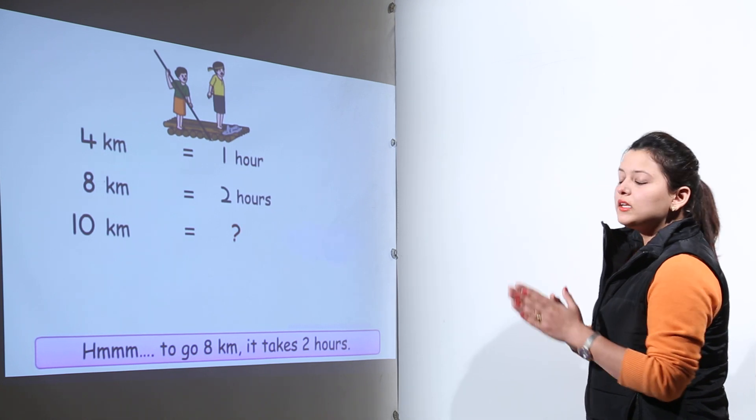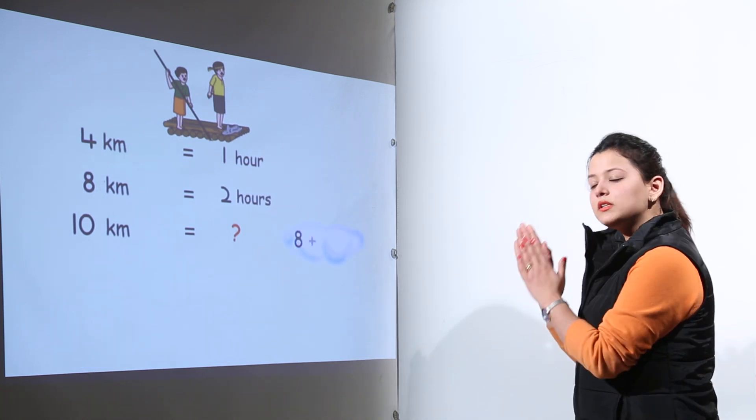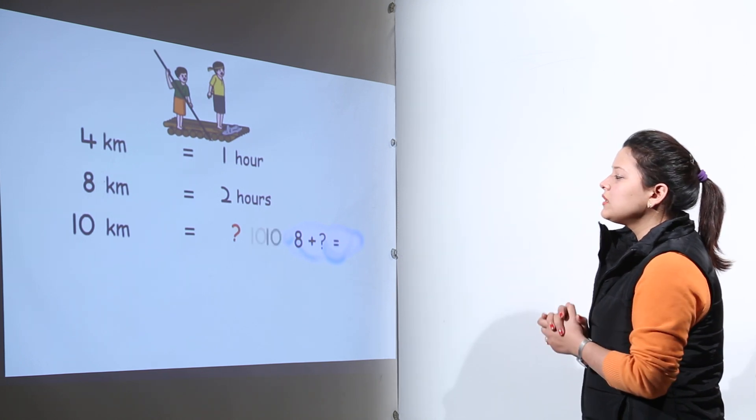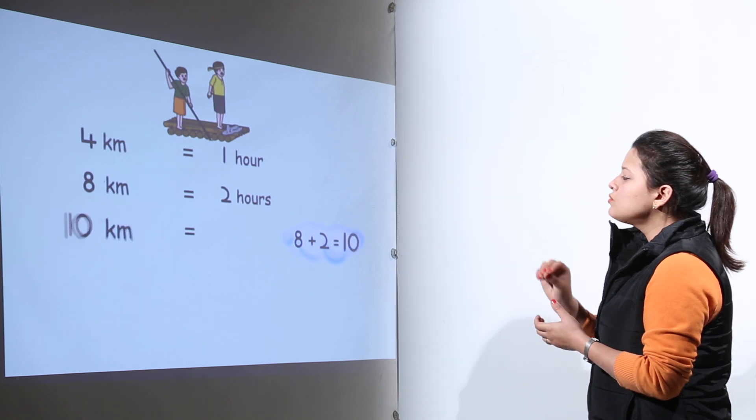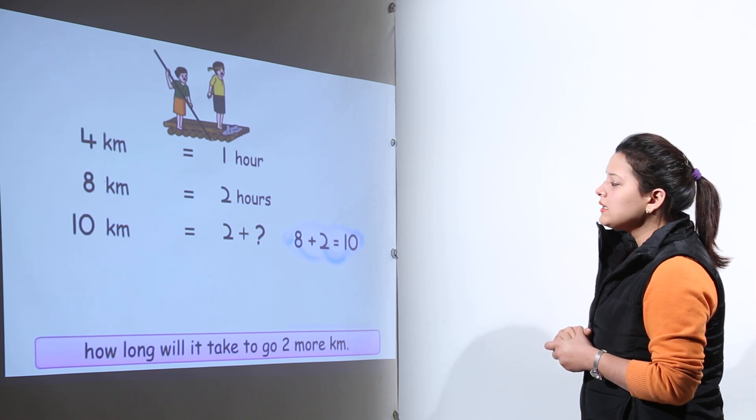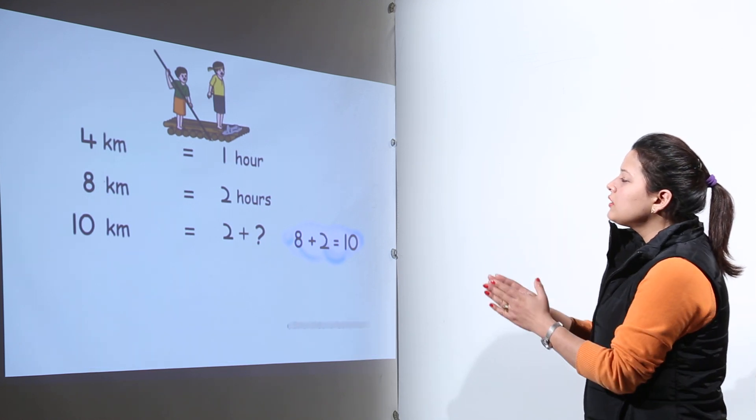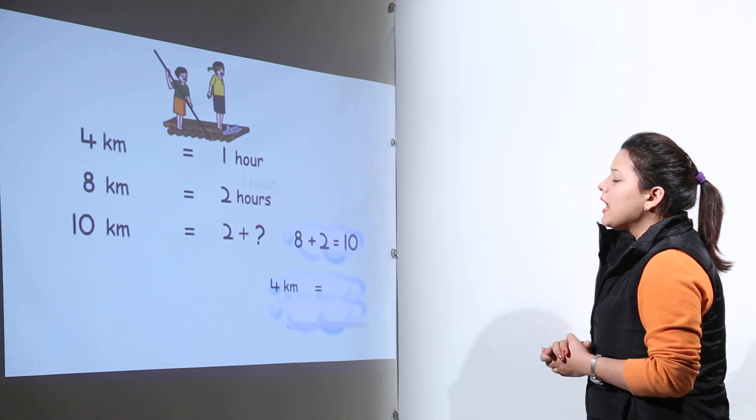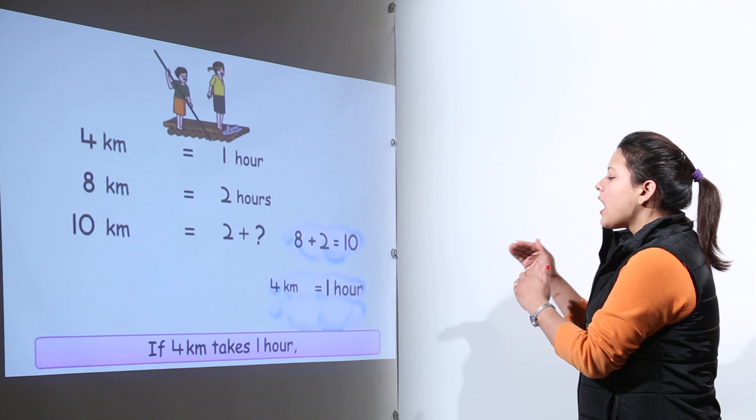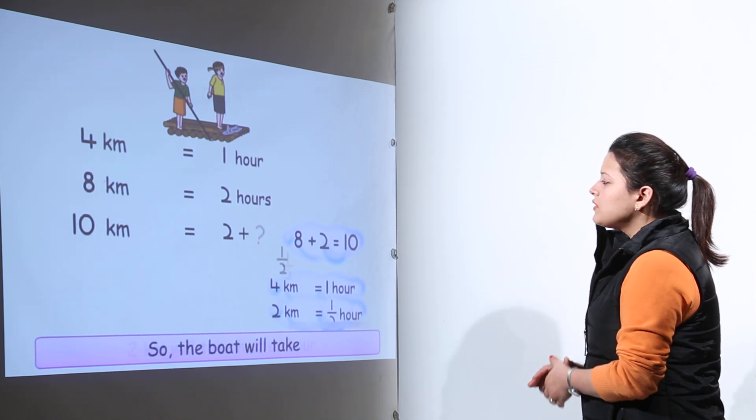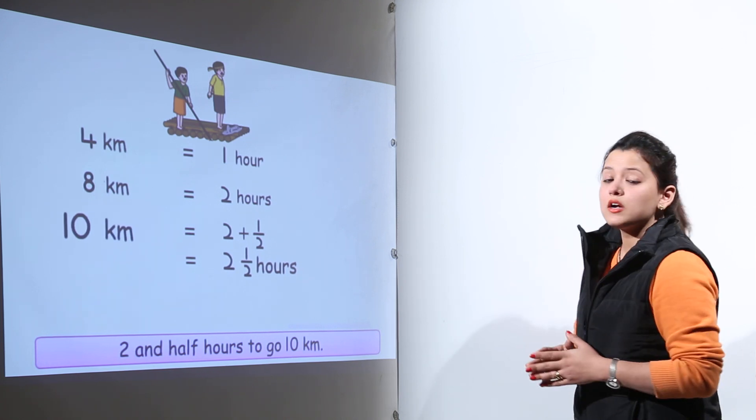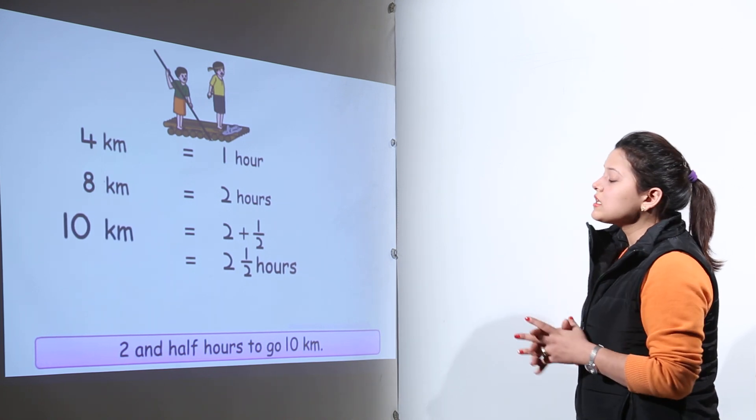For ten kilometers, first of all we know ten kilometers is made up of eight kilometers plus two kilometers. For eight kilometers we can travel in two hours, that is fixed. The rest two kilometers can be calculated with the help of four kilometers. We can see that four kilometers traveling needs one hour, and two kilometers, that is just half of that, will need half of the time, that is half an hour. So we have in total two hours and one and a half hour, that is two and a half hours required to travel a distance of ten kilometers.